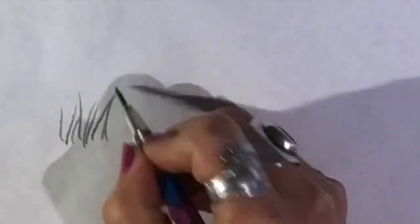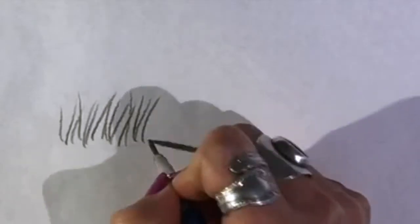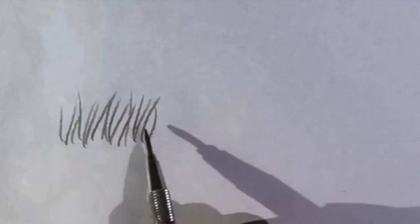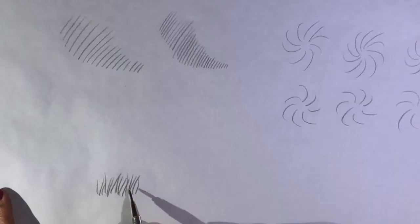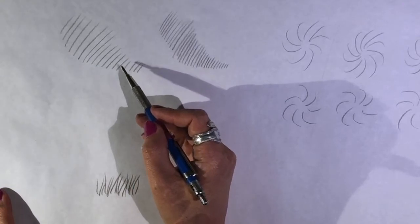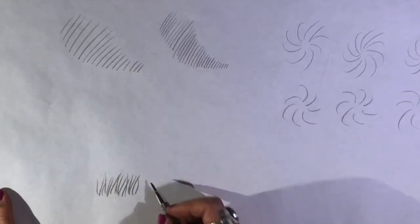What I'm doing is flicking lines up in different directions. Grass is variable and learning how to hatch in a way that is slightly variable is very useful because it looks far more natural when doing hair, fur, or grass than if you're just drawing parallel lines. You want some degree of variety, which means flicking your pencil up in slightly different directions.